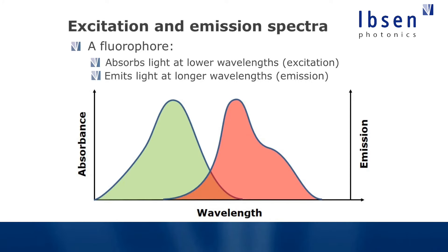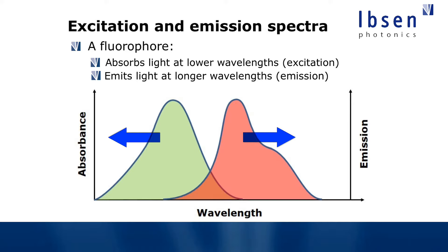Here we're looking at the excitation and emission spectra — the optical spectra of a fluorophore. The key point is that a fluorophore always absorbs light at shorter wavelengths, illustrated by the green graph, and emits light at longer wavelengths, illustrated by the red graph.